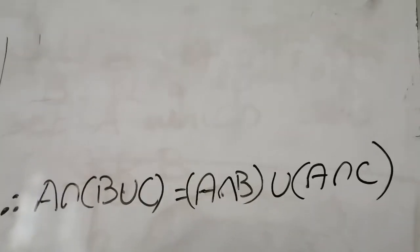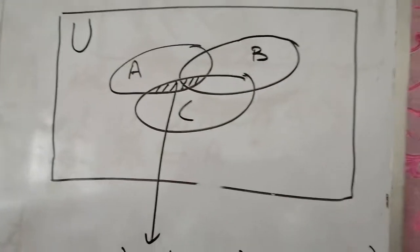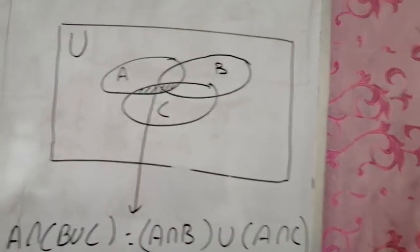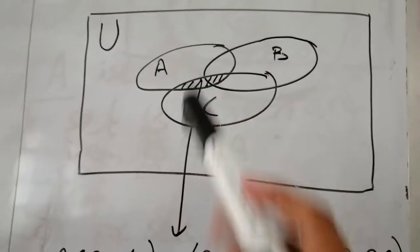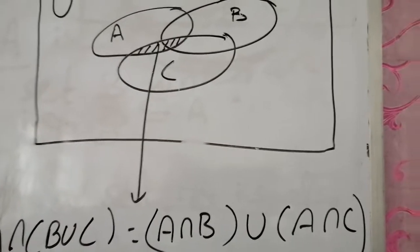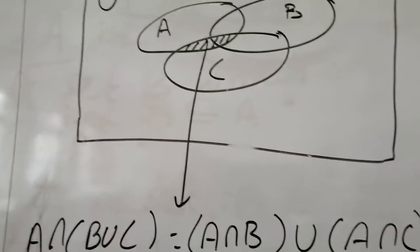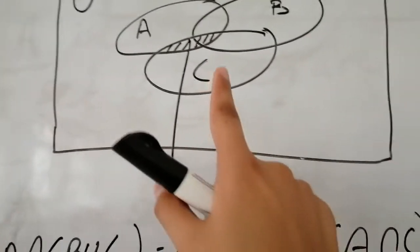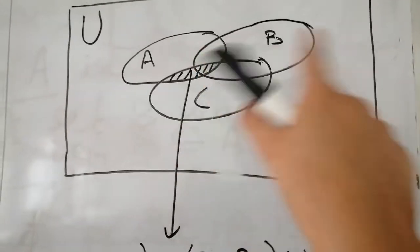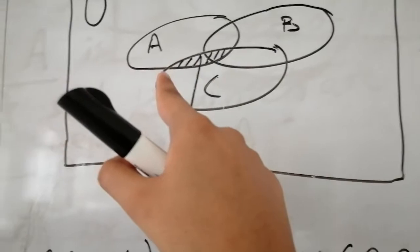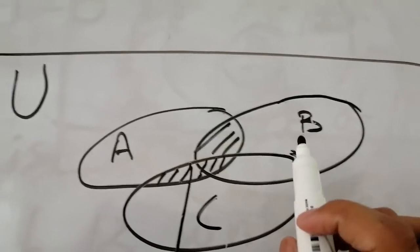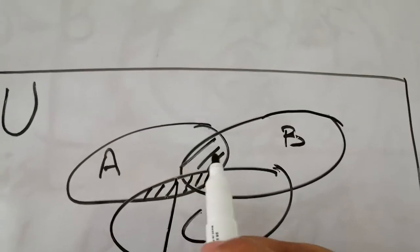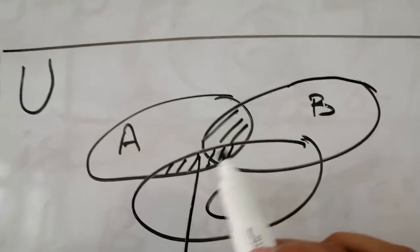Representing with a Venn diagram, we first take B union C, which includes all elements of B and C. Taking intersection with A gives only the portion of A that is common with B union C. On the right side, A intersection B and A intersection C are taken separately and then their union is highlighted — the combined portion of A with B and C is the same, confirming the distributive property of intersection over union.